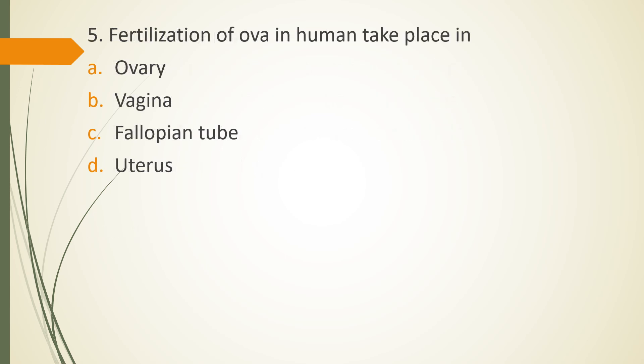Question 5. Fertilization of ova in human takes place in. What is the location of fertilization in humans? Option A. Ovary. Option B. Vagina. Option C. Fallopian tube or Option D. Uterus. The correct answer is option C. Fallopian tube.